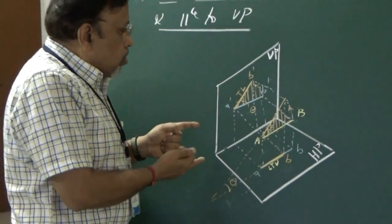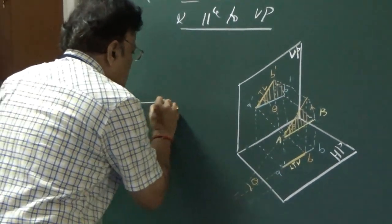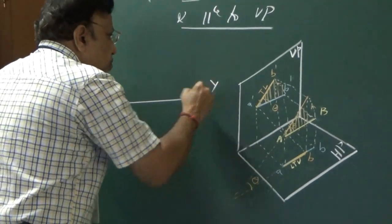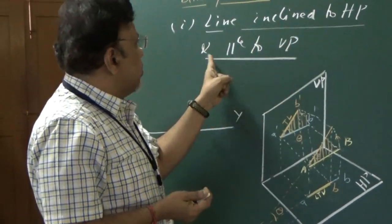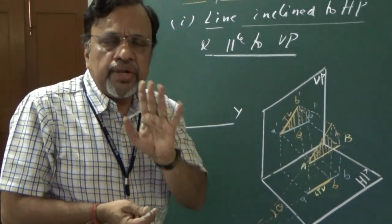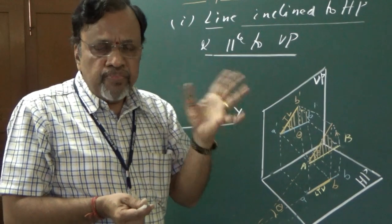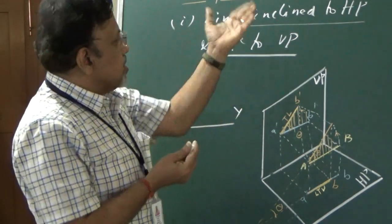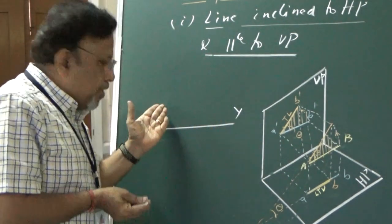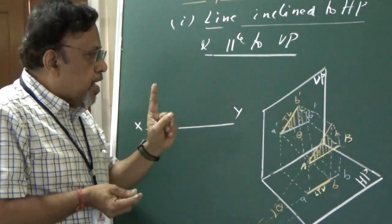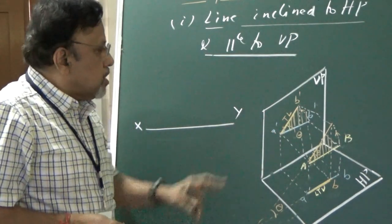Let me show this on the drawing sheet. I will draw an XY line. After drawing the XY line, I need to decide from which view to start. In this case the line is inclined to HP and parallel to VP. Since the line is parallel to VP, the true length is seen in the front view, so I need to start from the front view. For the problem, one end of the line must be specified — for example, the end is 20 mm above HP and 30 mm in front of VP.